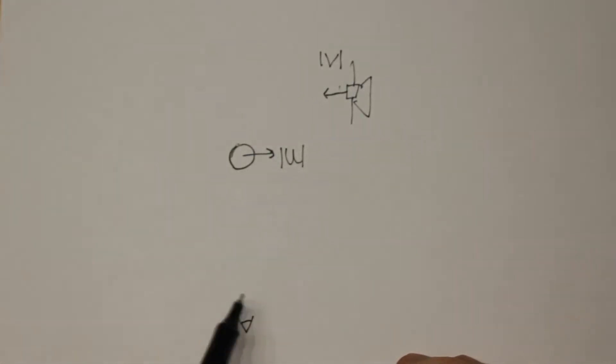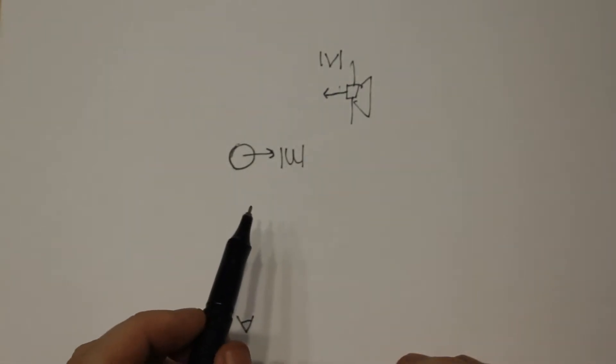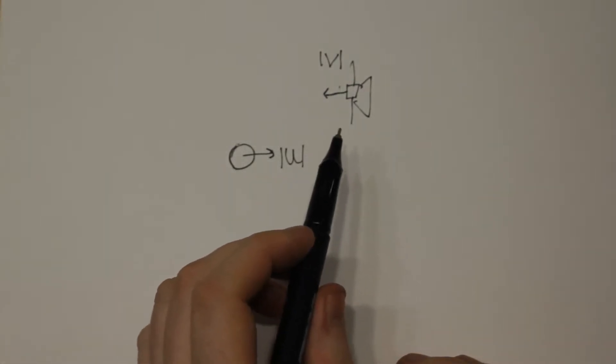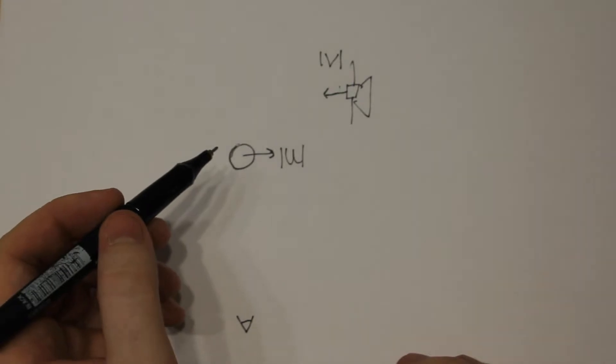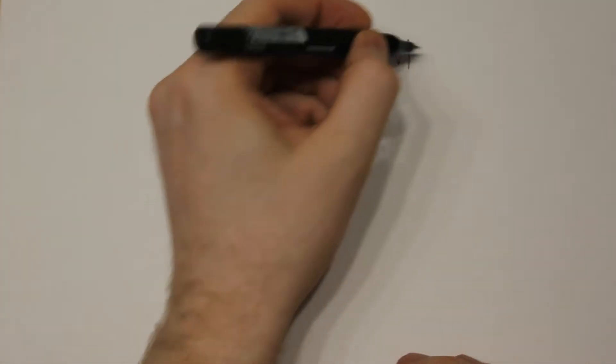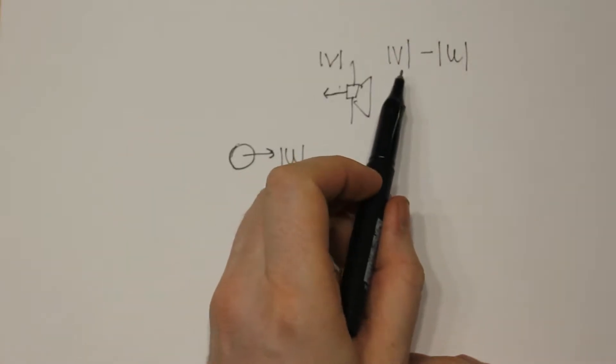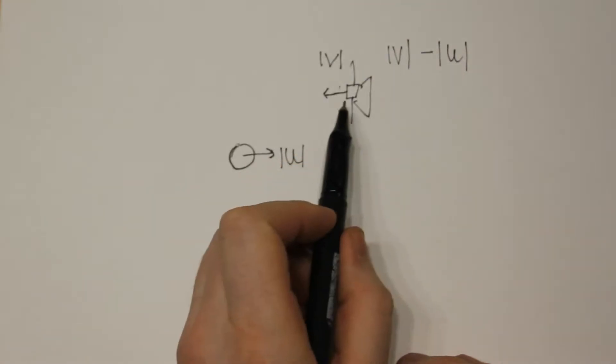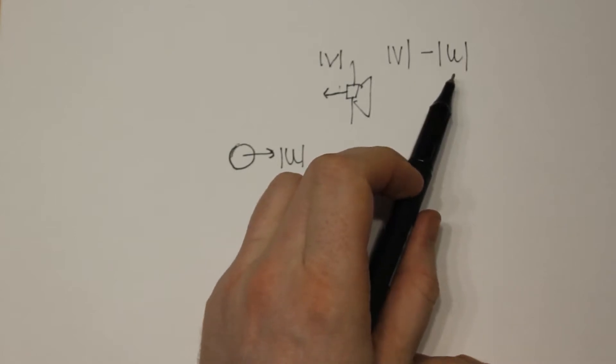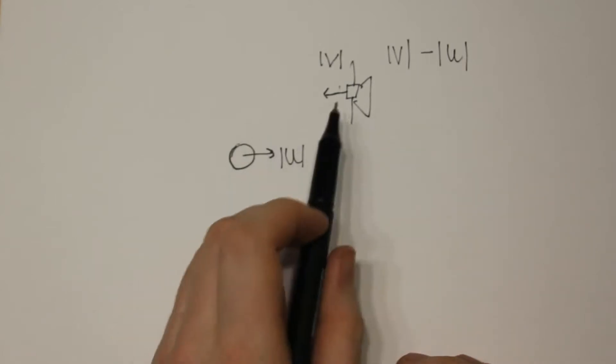From an observer that's observing this setup, we will see that the probe here is moving with a total speed of the magnitude of v minus the magnitude of u. So it's the total magnitude of the satellite minus the total magnitude of the velocity of the planet because they're moving in opposite directions.